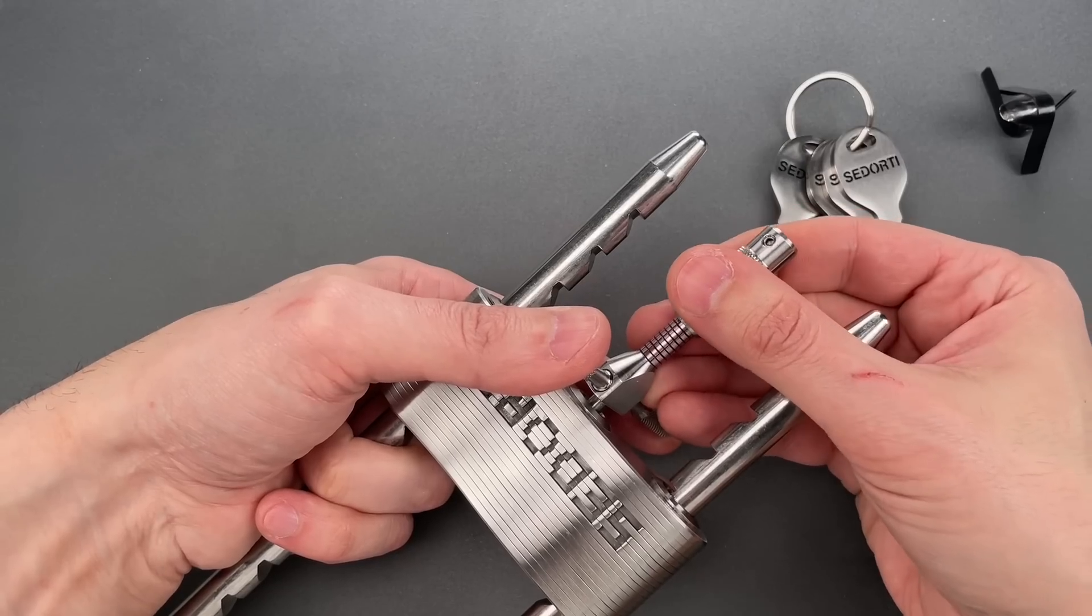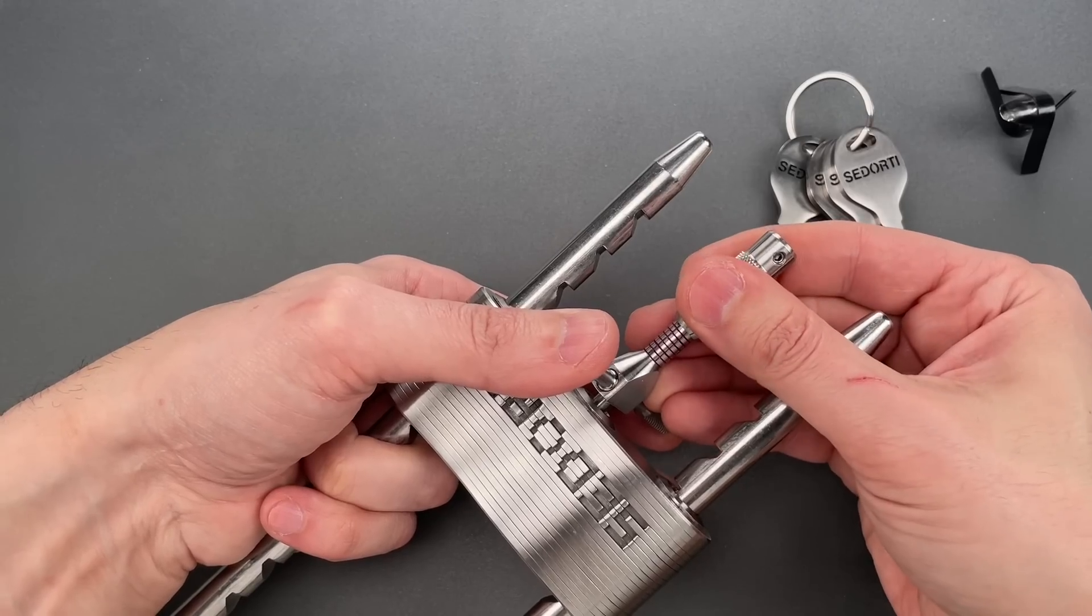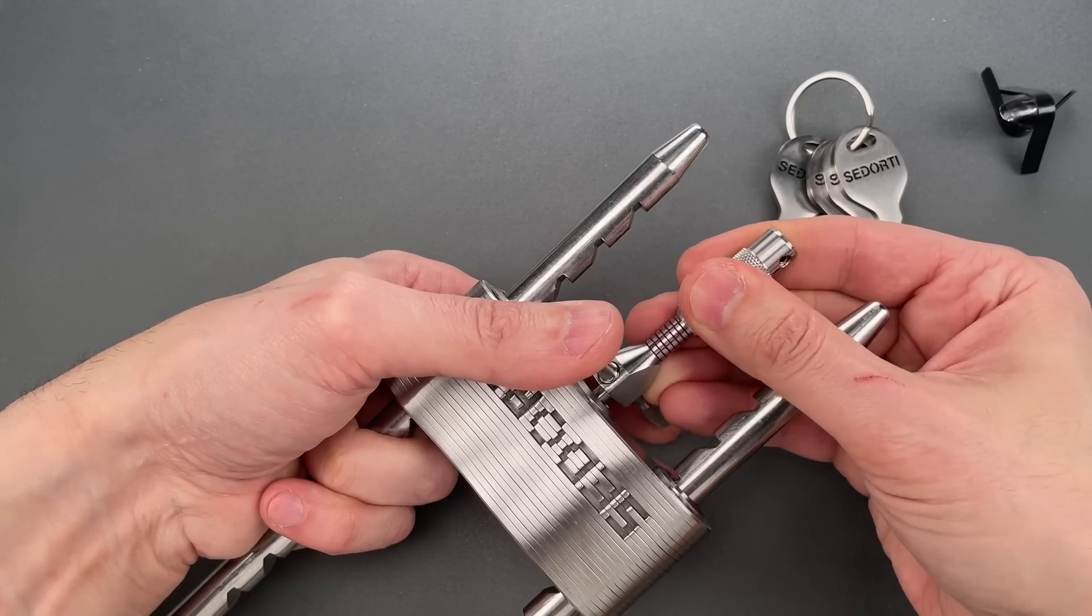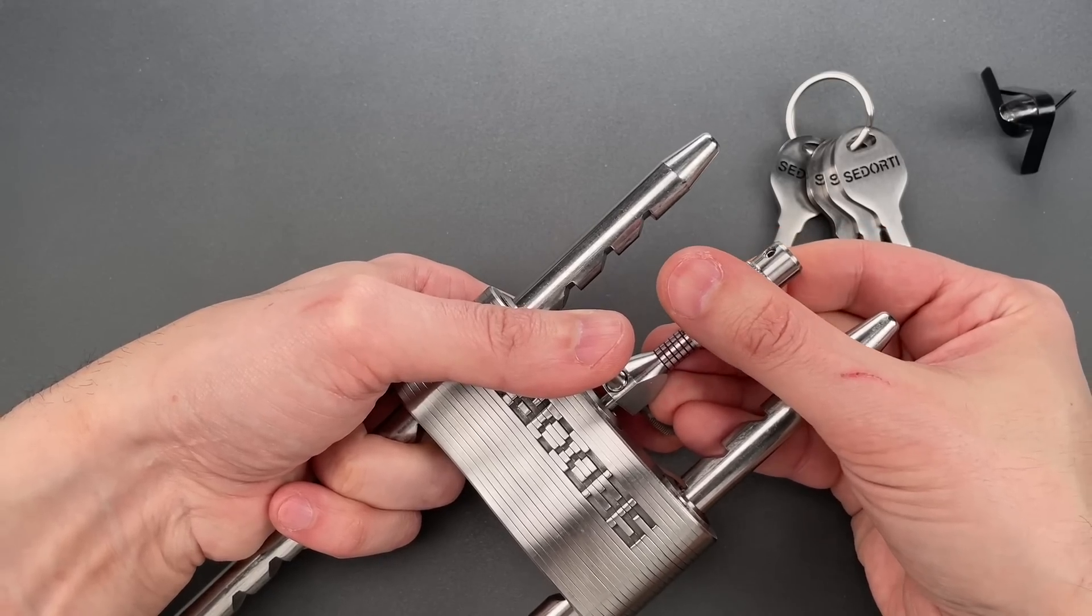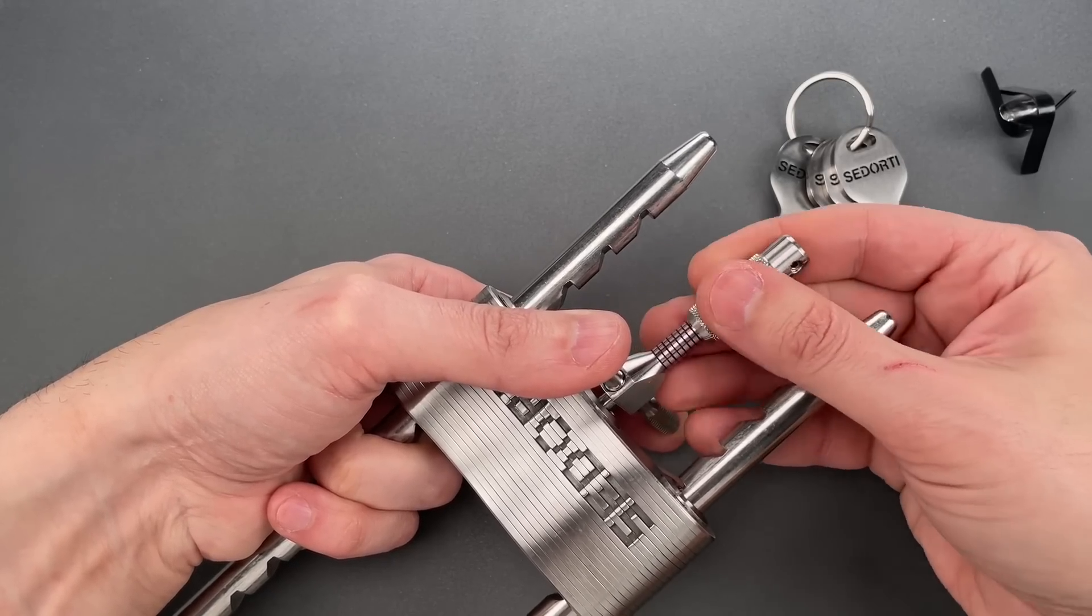Six, I believe, is a zero cut. Seven is binding. Nice click there. And I think that was all of them.